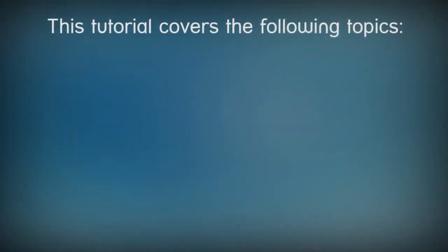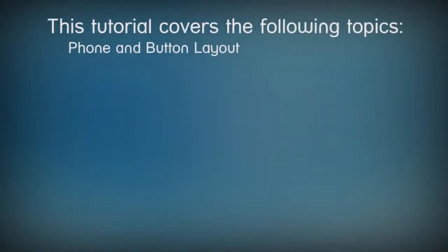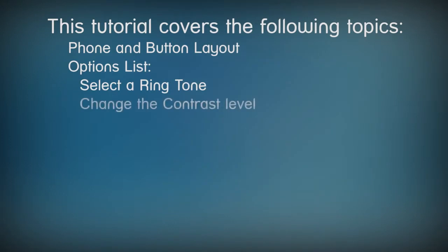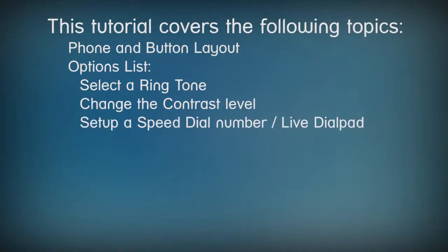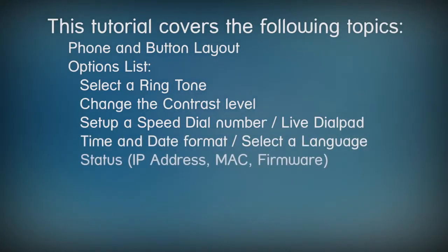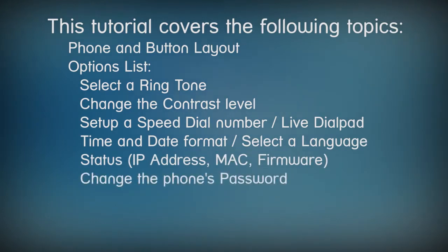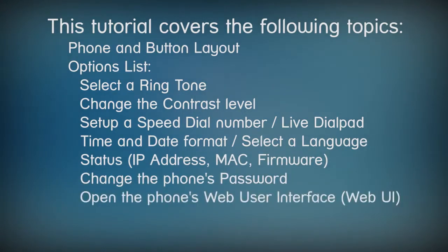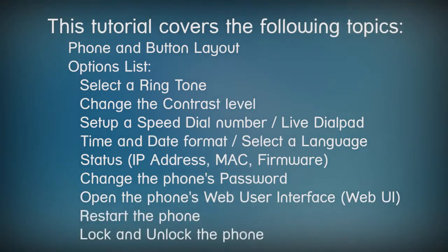In this tutorial I'll cover the following topics. We'll take a quick look at the layout of the phone, then we'll go through a series of options where you can select a ringtone, change the contrast level of the LCD screen, set up a speed dial number and live dial pad, modify how the date and time are displayed, choose a language, check the status of the phone, change the phone's password, open the phone's web user interface, restart the phone, and lock and unlock the phone.